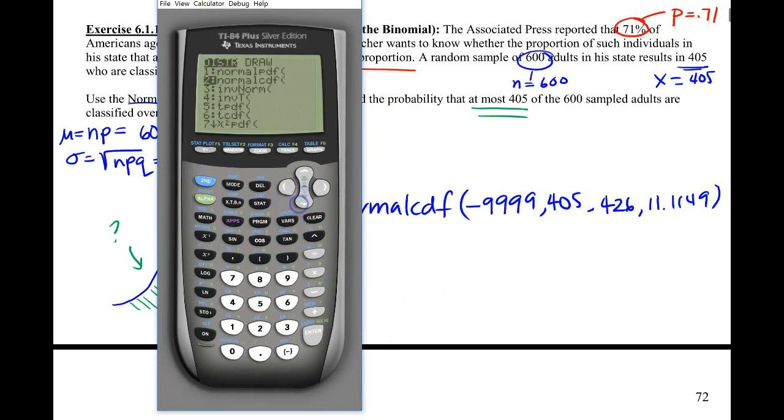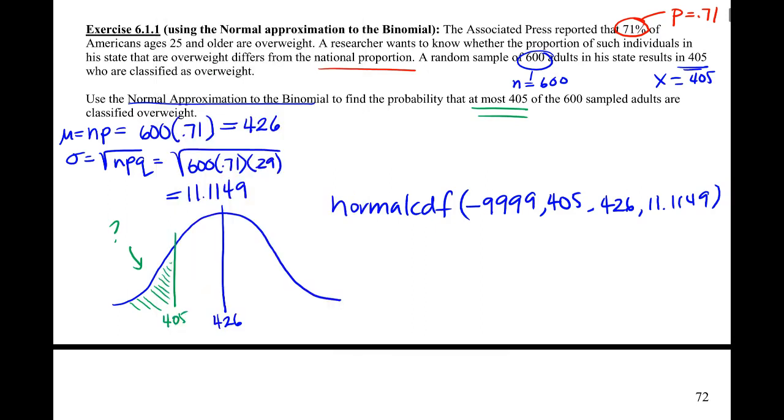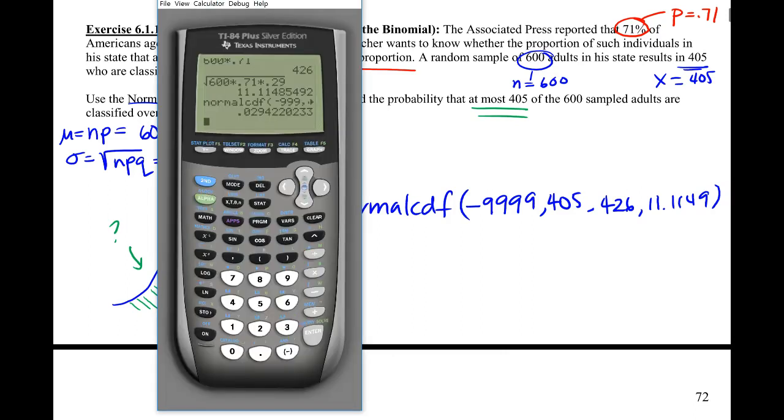We'll do our normalCDF, negative crap ton of nines, 405, our mean, and our standard deviation. I could have used the continuity correction here, but like I said, I don't think we need to, especially because we're not going to be able to use it moving forward at the proportions. So this will allow us to actually compare kind of apples to apples. So right around 3%, 0.0294.